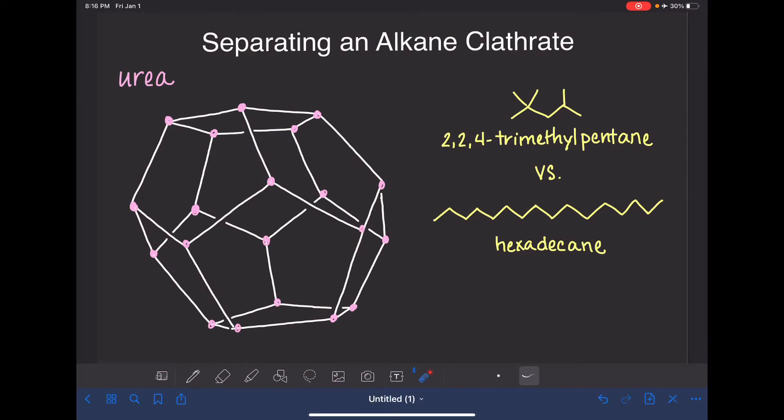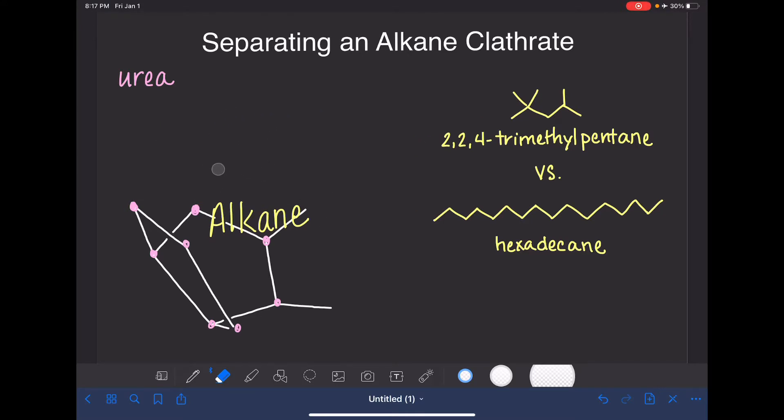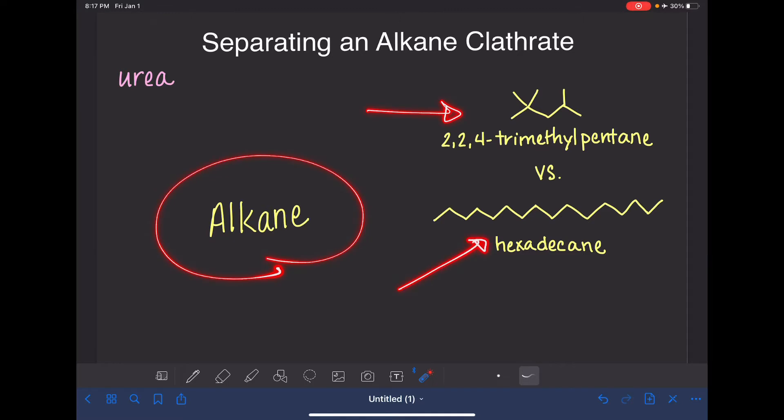It's now time for us to identify which alkane was trapped inside our clathrate. I'm just going to write alkane because we don't know for sure exactly which alkane is trapped in there. So in order for us to identify the alkane that's trapped inside this clathrate, we have to get it out of the clathrate. We have to break the cage. And the way that we do that is by adding water. Water is known to break apart or decompose a urea clathrate. When we add water, it's just going to break apart this whole entire cage and we'll be left behind with just the alkane. Once we've isolated this alkane, we'll be able to characterize it using IR.